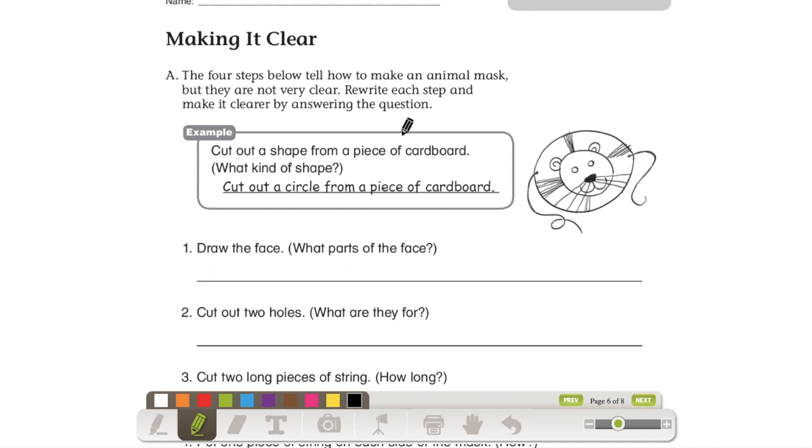Next page. Always read the directions first. The four steps below tell how to make an animal mask, but they are not very clear. Rewrite each step and make it clearer by answering the question. The example is, cut out a shape from a piece of cardboard. Now, they tell you the action, cut out, but did they tell you what shape? Nope. So what if they cut a triangle? Would that be the right shape? No. So make sure you are specific so people can follow along.